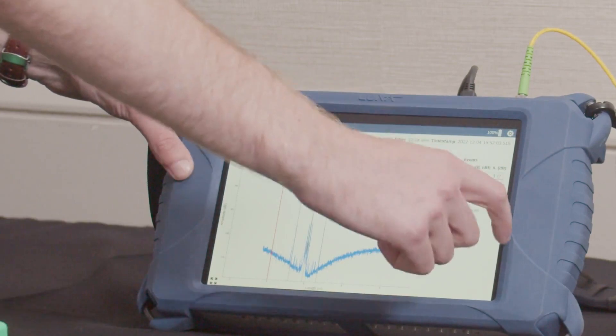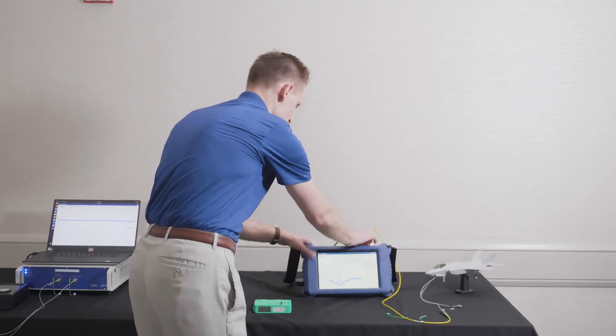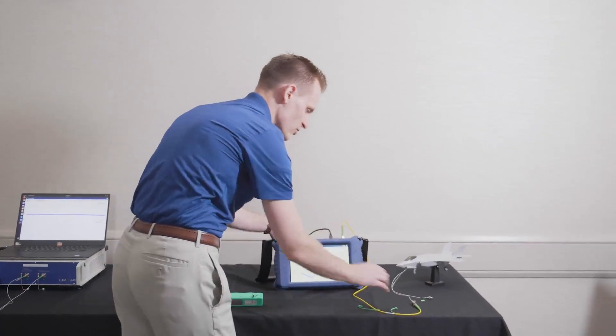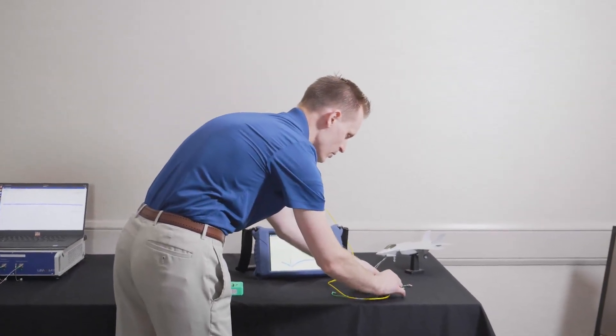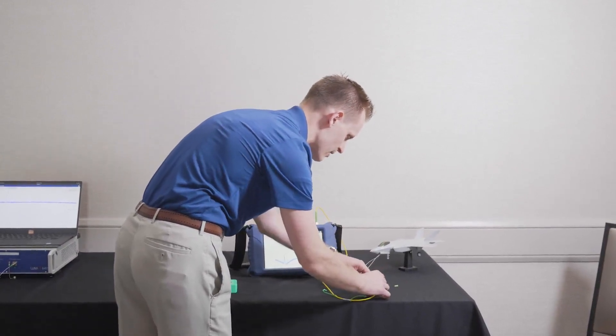So when I select that, it now shows the detected events here on the right hand side. If I go back to our well-constructed network, you can see it easily spots all of these connections along the way, as well as the fiber termination itself.